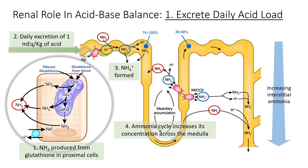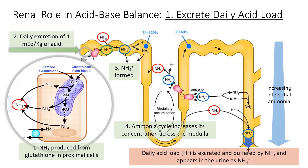The ammonia cycle increases the concentration of ammonia across the medulla. The daily acid load is excreted and buffered by ammonia, and appears in the urine as ammonium.